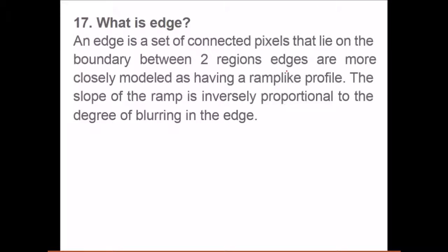What is an edge? An edge is a set of connected pixels that lie on the boundary between two regions. If this is one region and this is another region, this is considered an edge because these are the pixels found at the boundary of two regions. They are more closely modeled as having a ramp-like profile. The slope of the ramp is inversely proportional to the degree of blurring in the edge.